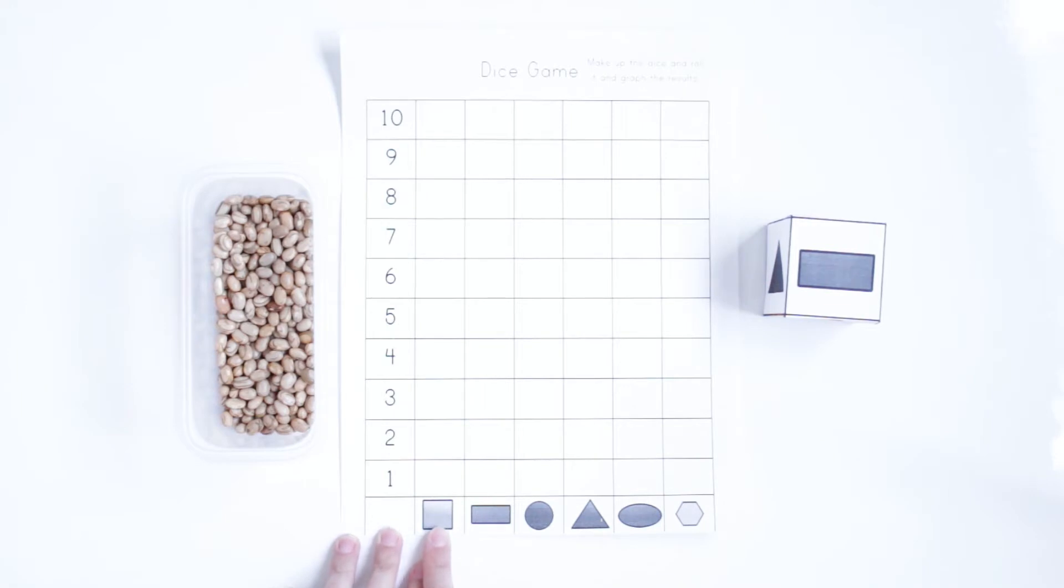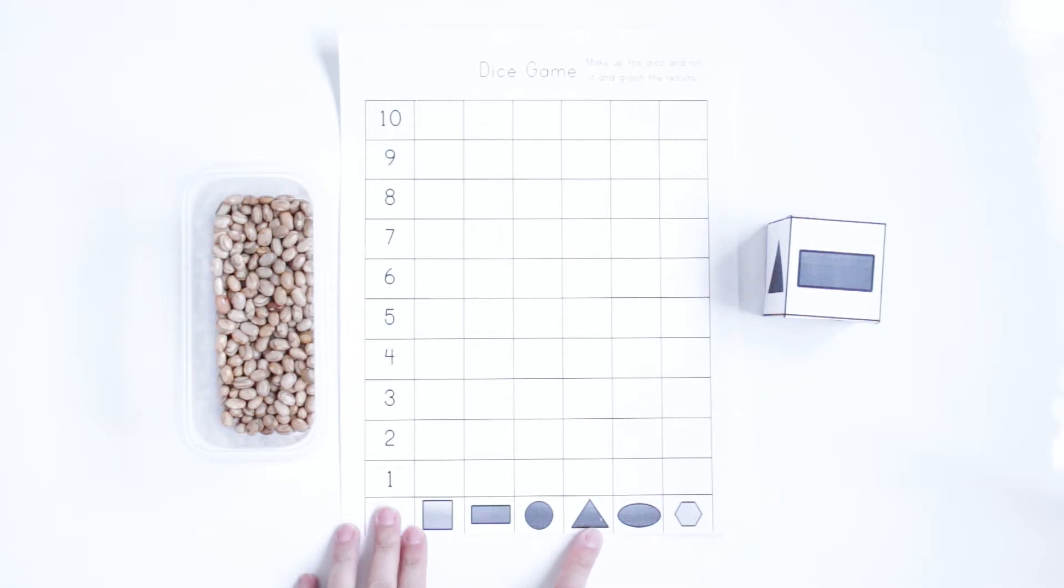So this is a square, rectangle, circle, triangle, oval, and hexagon.